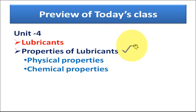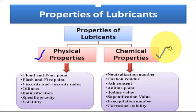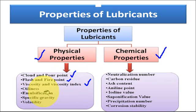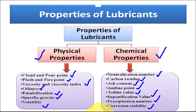The properties of lubricants are classified into two categories: physical properties and chemical properties. Physical properties include cloud and pour point, flash and fire point, viscosity and viscosity index, oiliness, emulsification, specific gravity, and volatility. Chemical properties include neutralization number, carbon residue, ash content, aniline point, iodine value, saponification value, precipitation number, and corrosion stability. We will discuss some of the important properties.